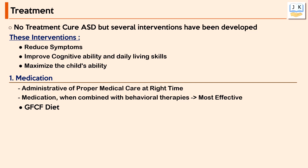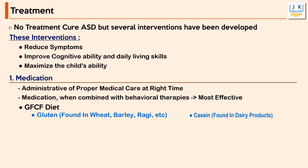Specific diet therapy — gluten-free, casein-free (GFCF) diet — is one of several alternative treatments for children with autism. Following this strict elimination diet means removing gluten (found in wheat, barley, and ragi) and casein (found in milk and dairy products) from the child's daily food intake. The GFCF diet is based on the theory that children with autism may have an allergy or high sensitivity to foods containing gluten or casein, and the goal is to reduce symptoms and improve social, cognitive, and speech behaviors.